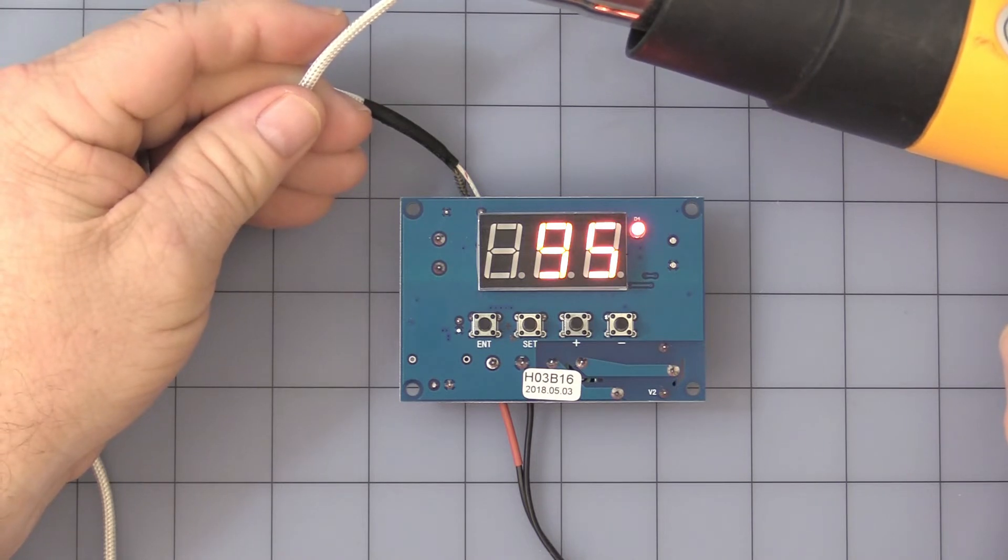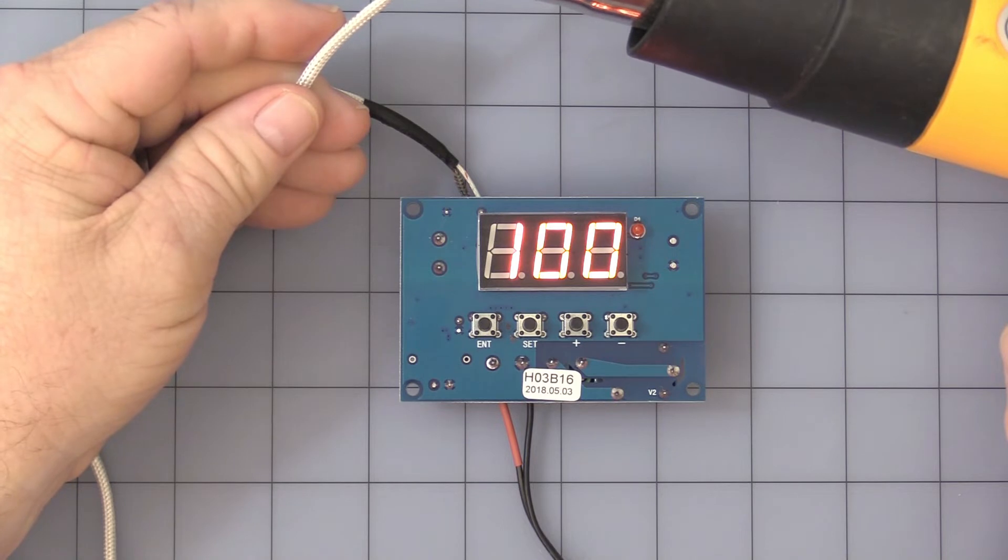So when it hits 100 degrees C, it should turn off. See the relay just turned off?